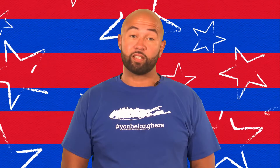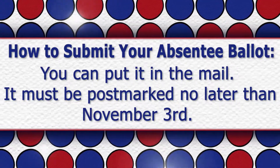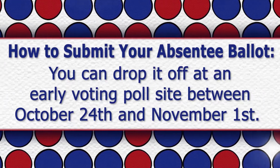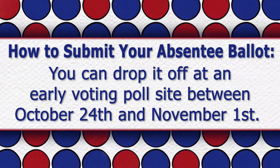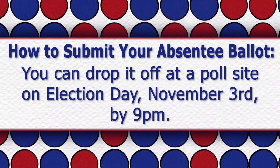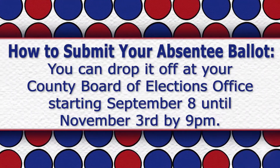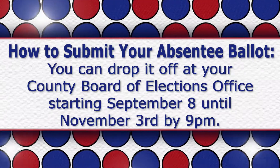Okay, now that you have your absentee ballot and have filled it out, let's review the different ways you can submit it. You can put it in the mail, but it must be postmarked no later than November 3rd. You can drop it off at an early voting poll site between October 24th and November 1st. You can drop it off at a poll site on Election Day, November 3rd, by 9 p.m. Or you can drop it off at your County Board of Elections office starting September 8th until November 3rd by 9 p.m.